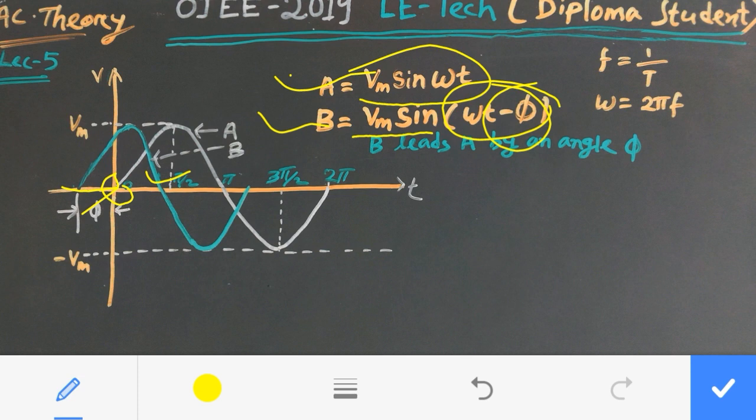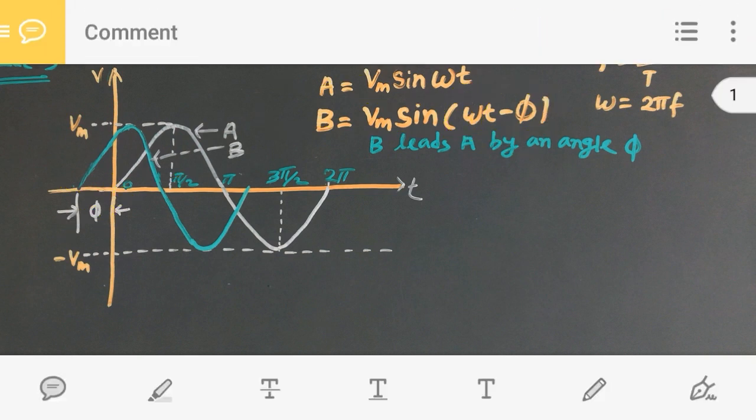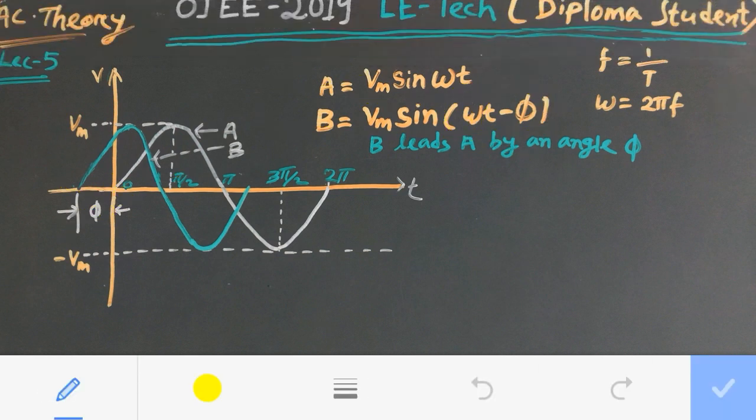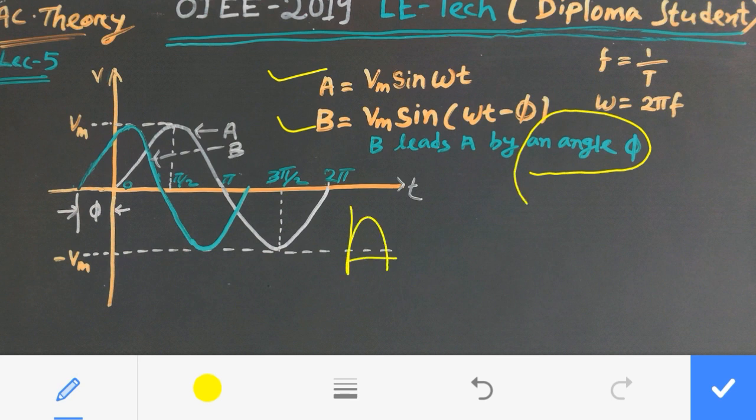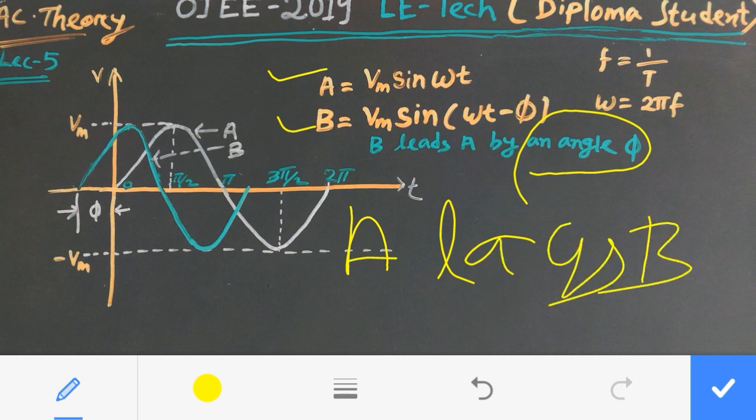So we are subtracting this angle phi. Signal B leads signal A by an angle phi. You can also say that signal A lags B by an angle phi.